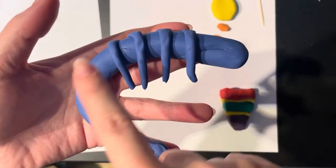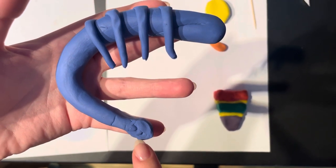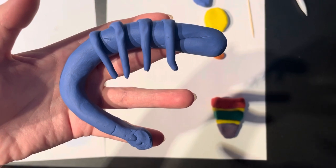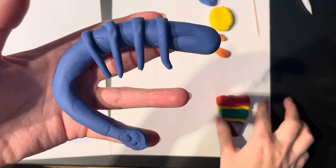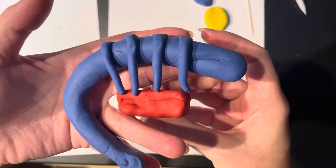Here I have the caudate nucleus with the amygdala here at the end of the tail. The caudate nucleus is connected to the lenticular nucleus with these cell bridges here. And here is the lenticular nucleus.